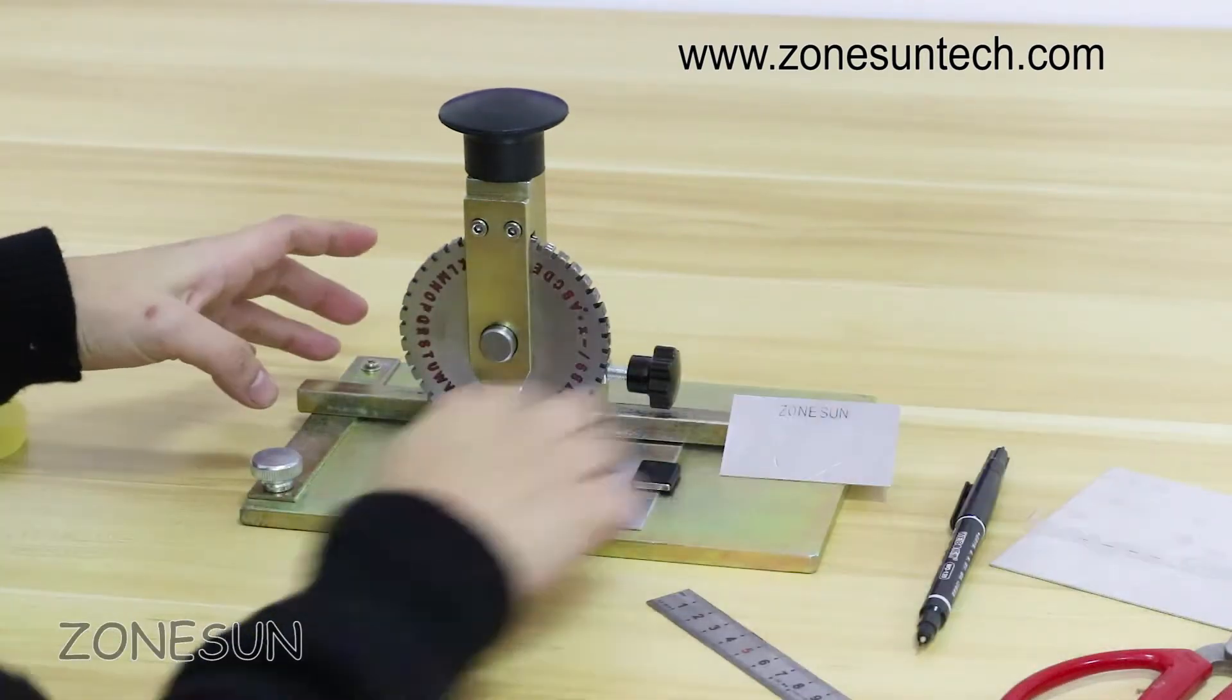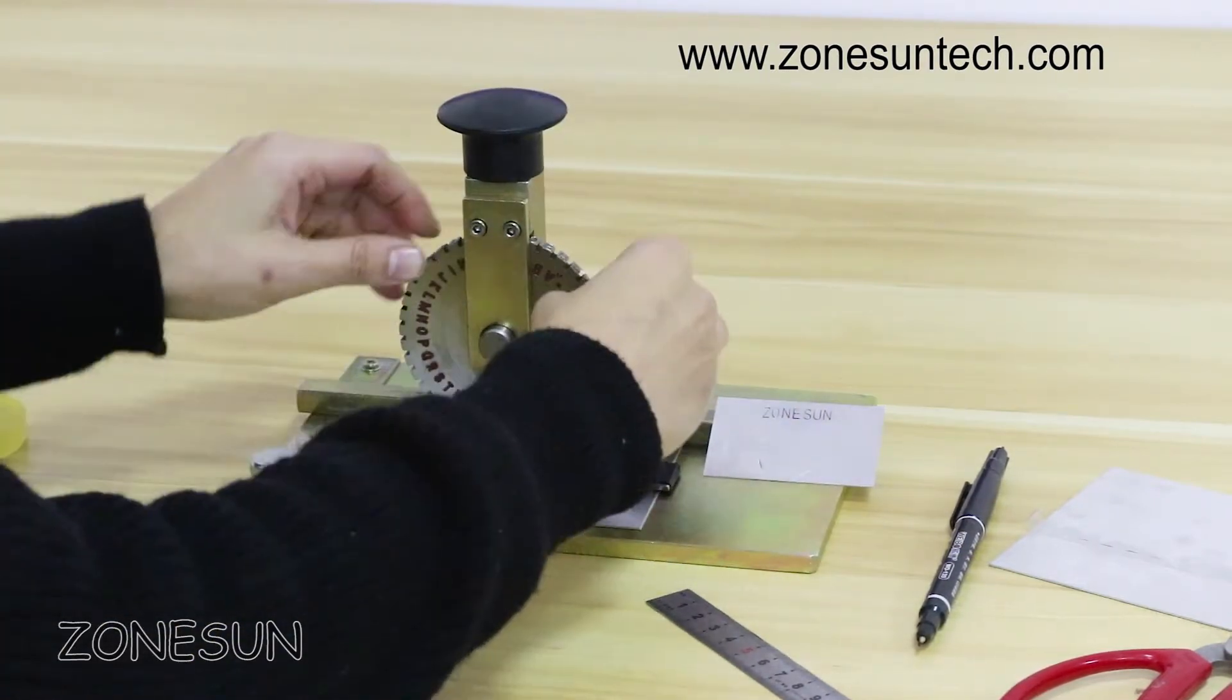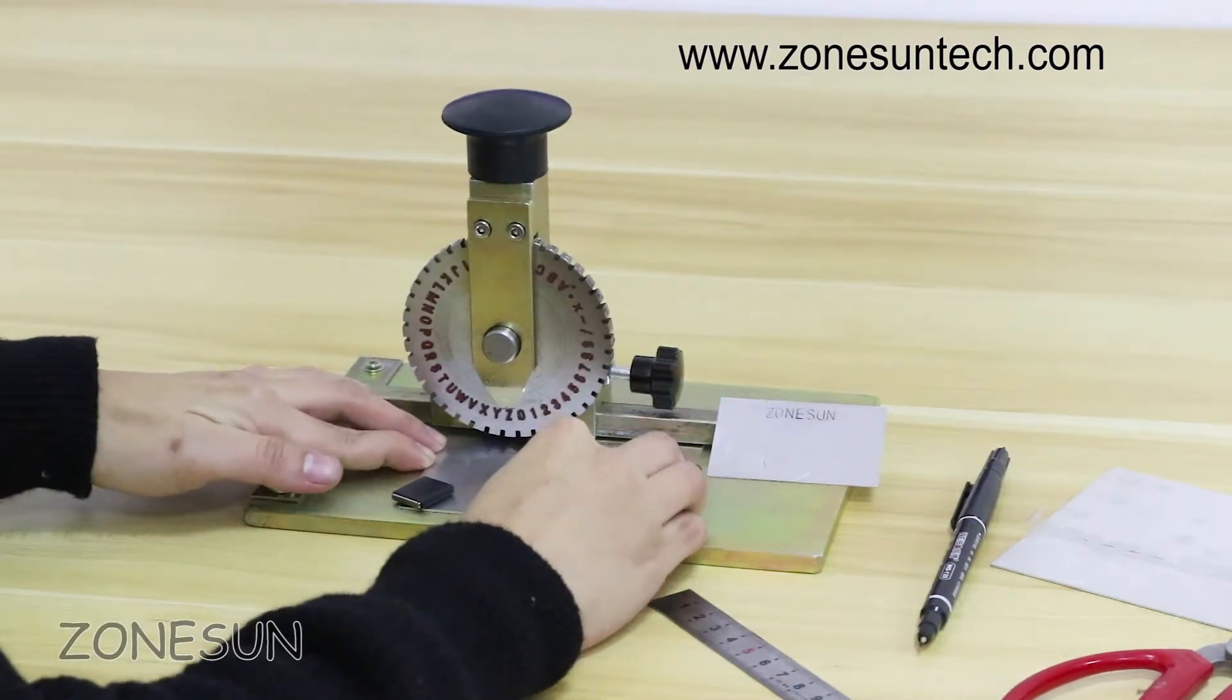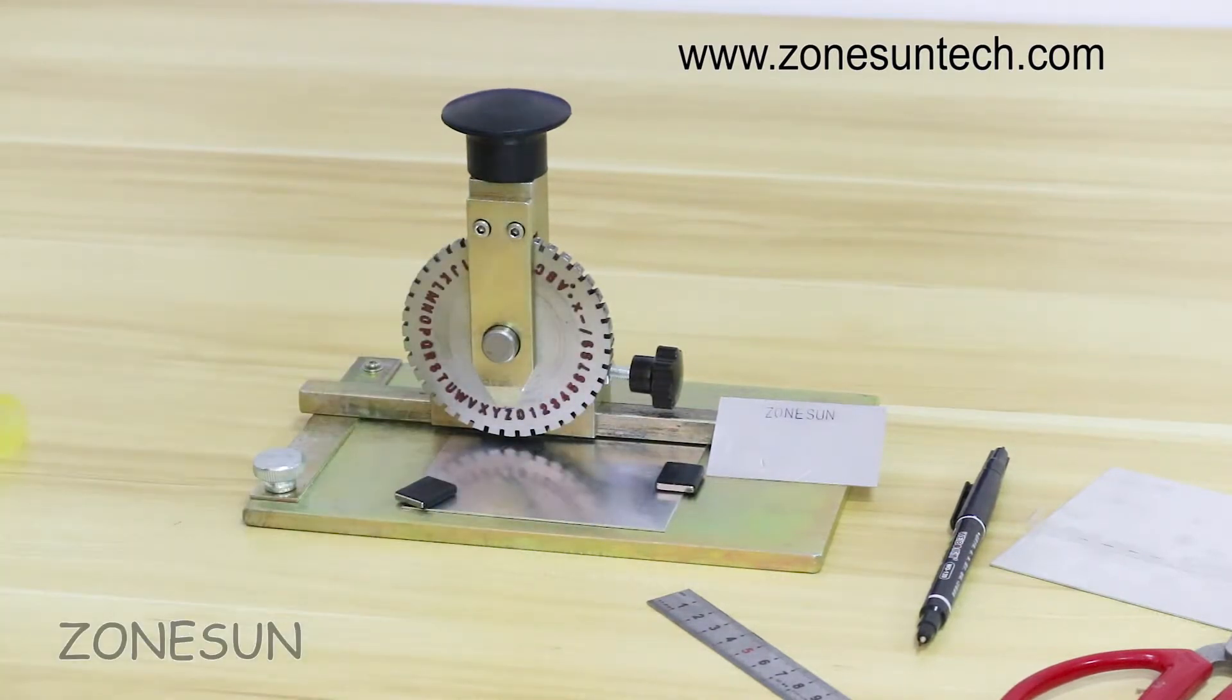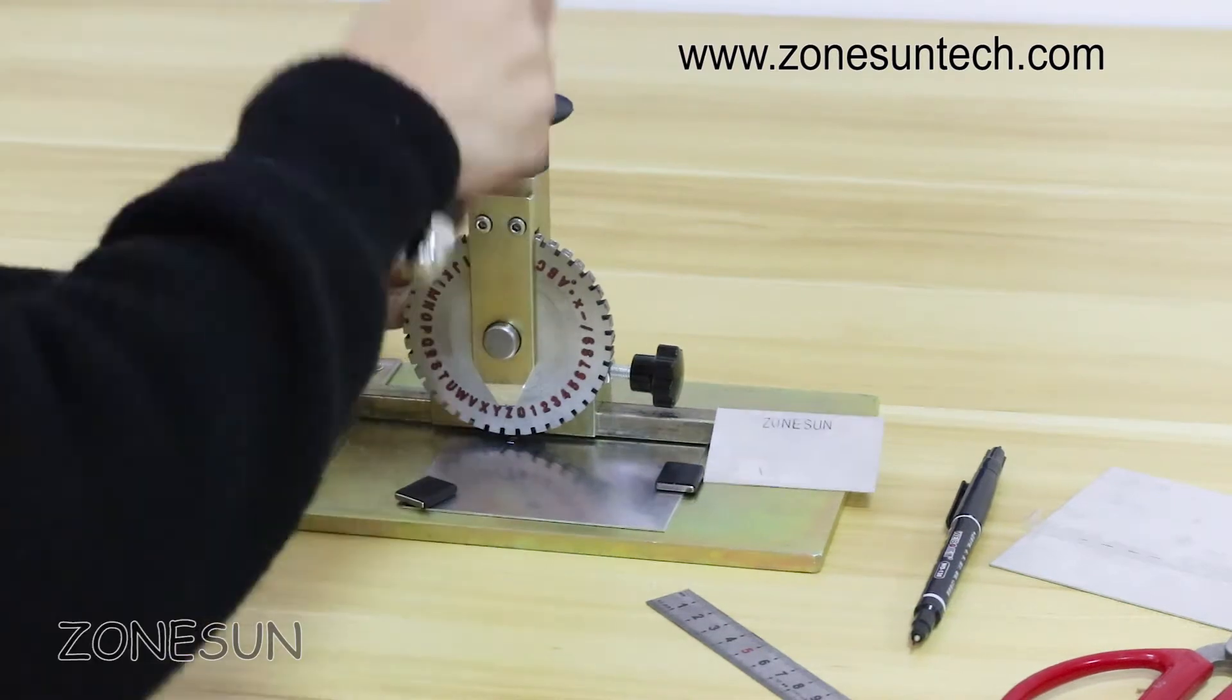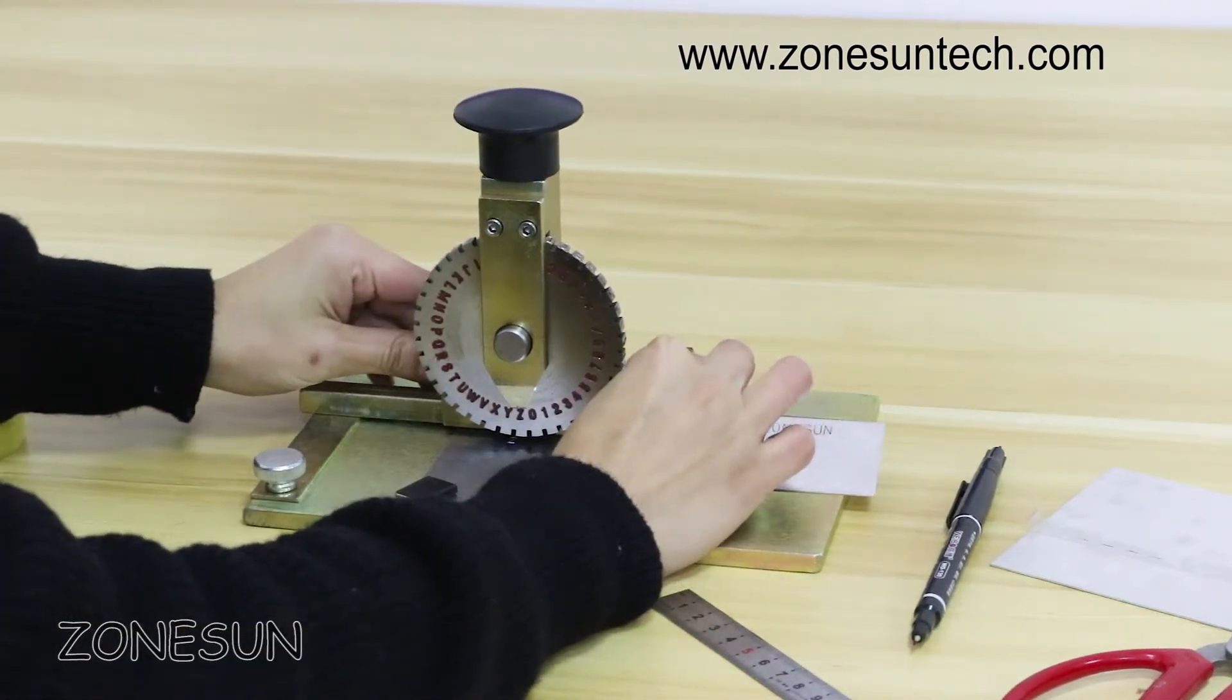So now you put it on and rotate it. See. I will make it this way. I use the handle to punch it. Press this. And move it to the next letter.